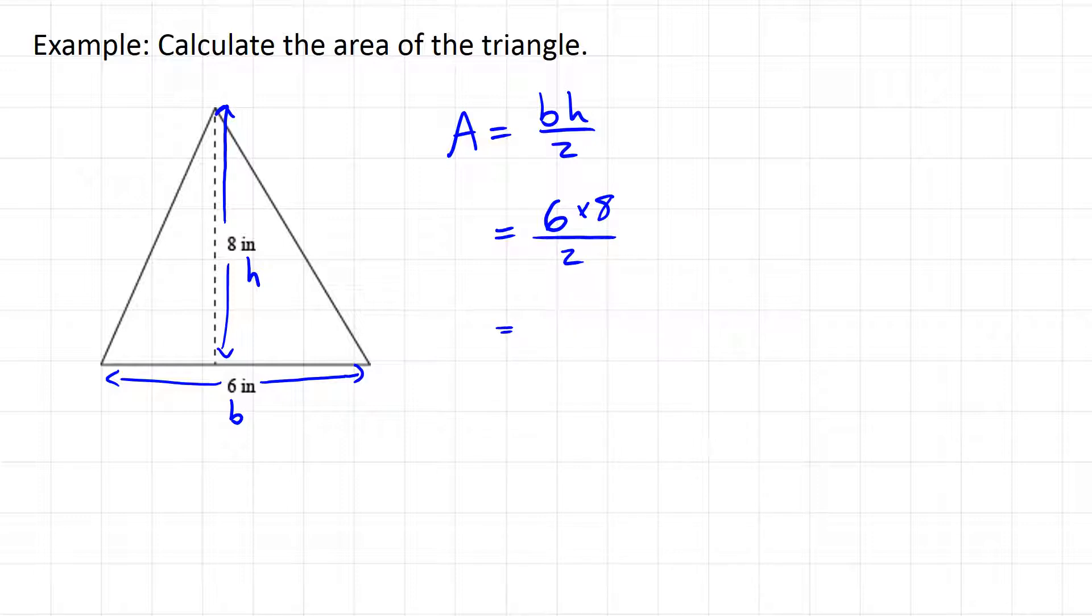Depending on how comfortable you are with your calculator, you can do this in a couple of steps, or you can do it all at once. If I did this in two steps, I'd do six times eight and get 48 first. And then I would do 48 divided by two and get 24 with my units of square inches. That's my area of that triangle.